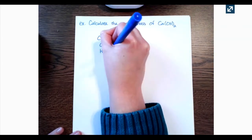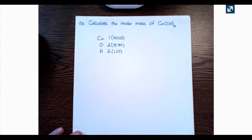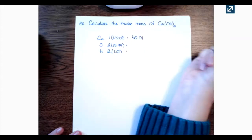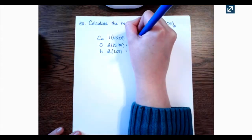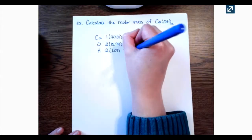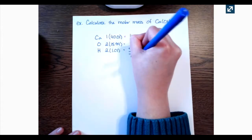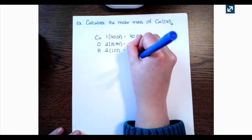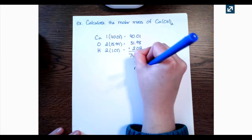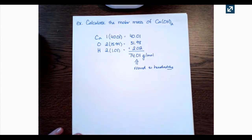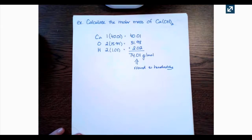Once we have the masses, we multiply each element's molar mass by its number of atoms. For calcium I get 40.01, for oxygen I get 31.98, and for hydrogen I get 2.02. Adding all of that up gives me an answer of 74.01 grams per mole. For molar mass problems, I recommend you always round to the hundredths place, since different periodic tables have different rounding values. So 74.01 grams per mole is the molar mass of calcium hydroxide.